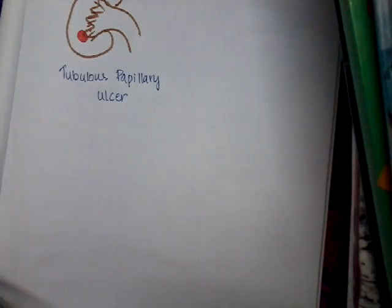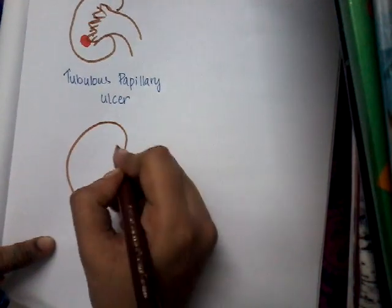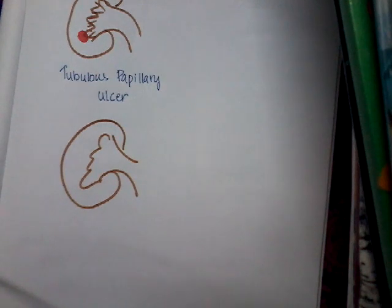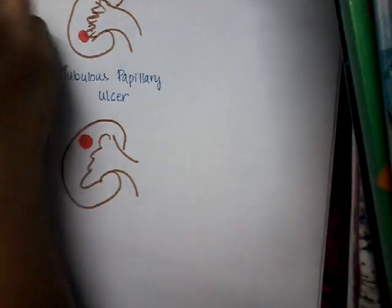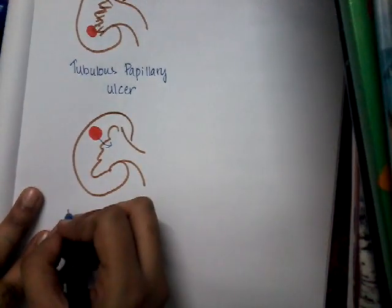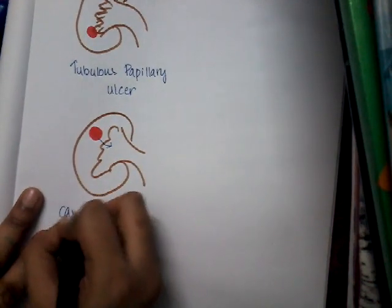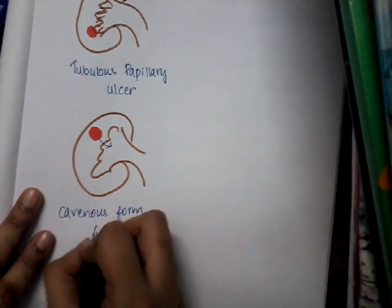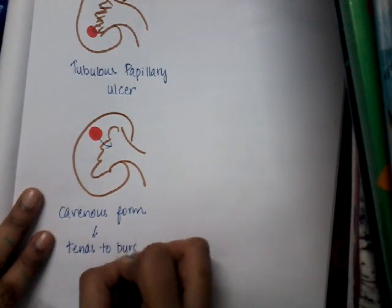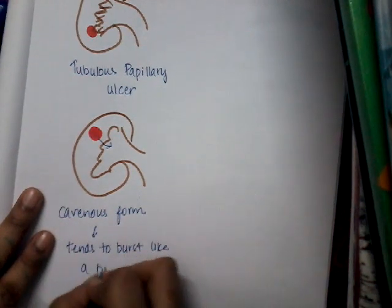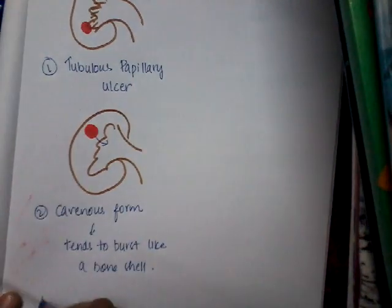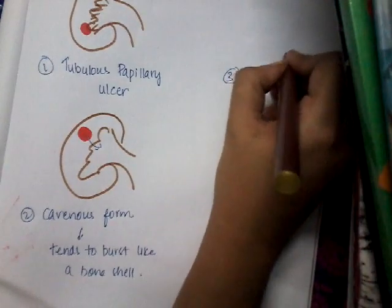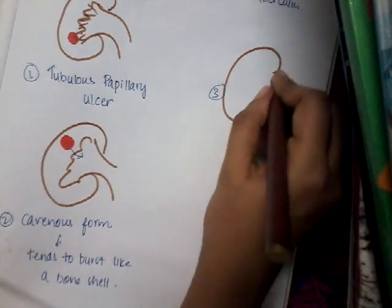The second type is the cavernous form. This cavernous form tends to burst out like a bombshell. The third type involves the formation of hydronephrosis.